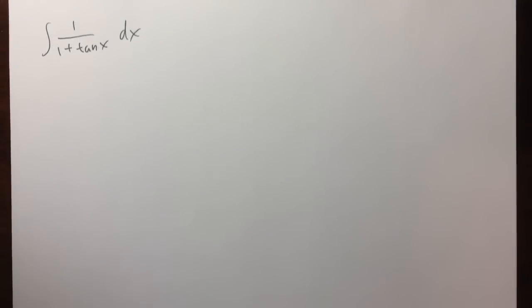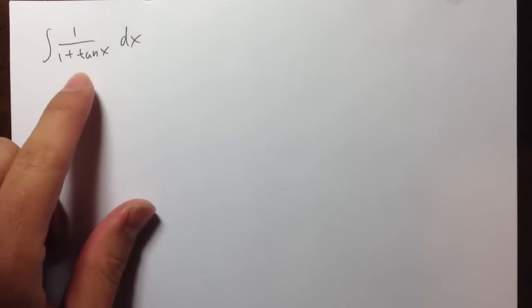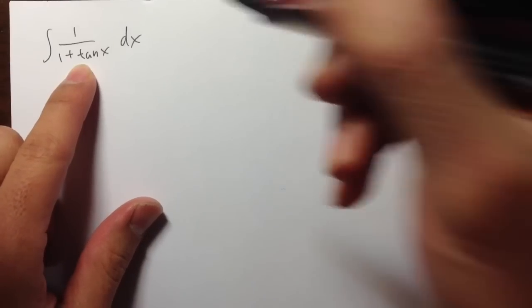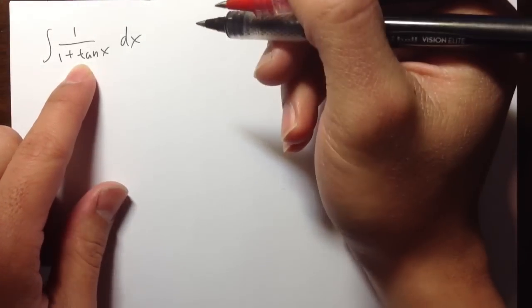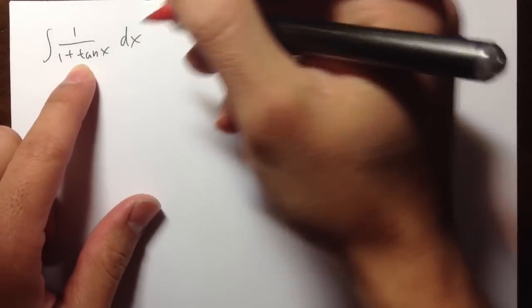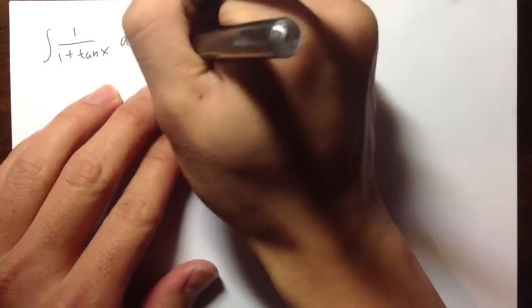Now let's talk about a more difficult integral, and that's the integral of 1 over 1 plus tangent x. Usually, when we see tangent x, all we want to do is change that to sine x over cosine x, and then see what we can go from there. So let's do that.